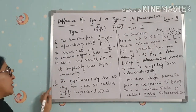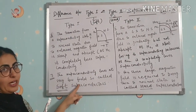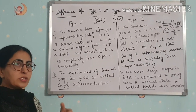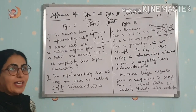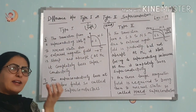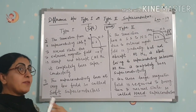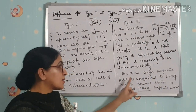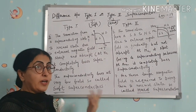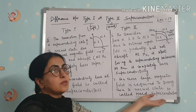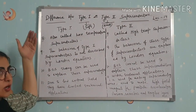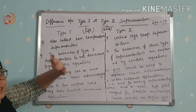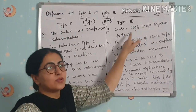Eighth difference: Type 1 superconductors lose superconductivity at a very low field, which is why they are called soft superconductors and also low-temperature superconductors (LTS). Type 2 superconductors require a large magnetic field to convert to the normal state, so they are called hard superconductors and also high-temperature superconductors (HTS).